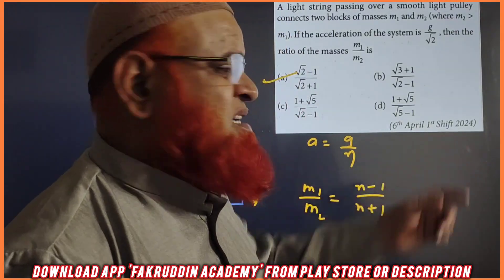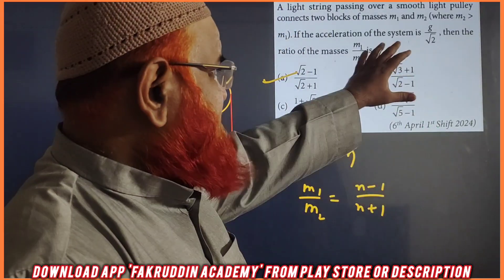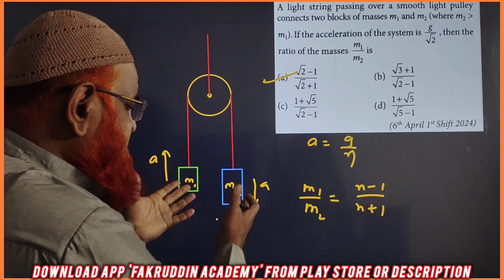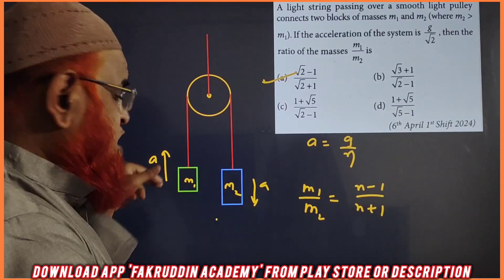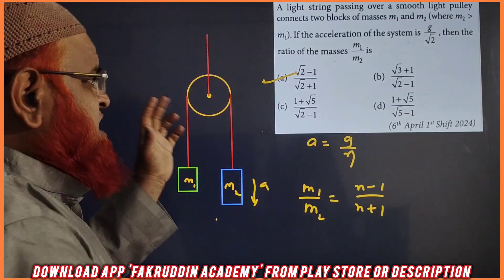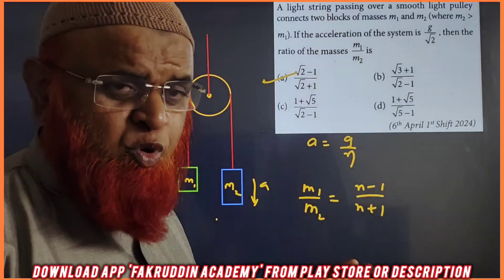My dearest friends, this is a previous year question asked in 2024. You can see that this is a system in which masses are there. M2 is dominating M1, it is coming down, it is going up. He is asking us to find out the ratios of M1 and M2.